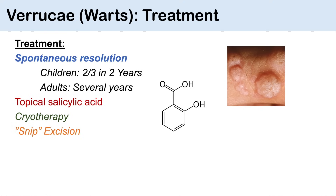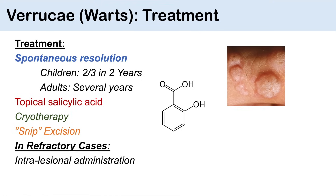For a filiform wart, you may need a small surgical removal — what we call a snip excision. However, if we continually treat the wart and it doesn't resolve, we can use intralesional administration of either bleomycin or fluorouracil. You may notice these are actually chemotherapy agents used in a variety of cancers, but they can be used to treat very difficult warts that won't resolve on their own or with standard treatment.